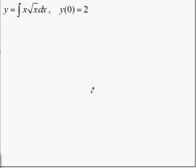The following is an example of an initial value problem. We're asked to integrate x√x dx, and we're told that y(0) = 2. That'll allow us to find the constant after we integrate.